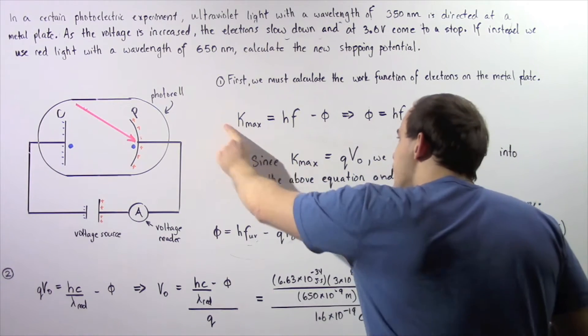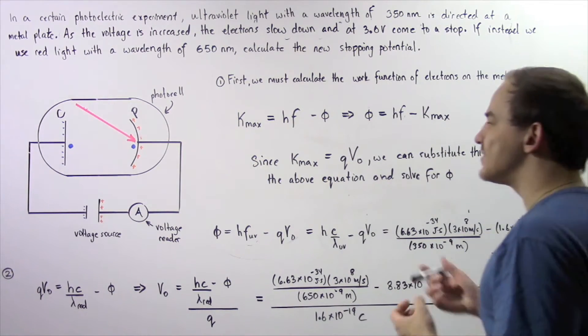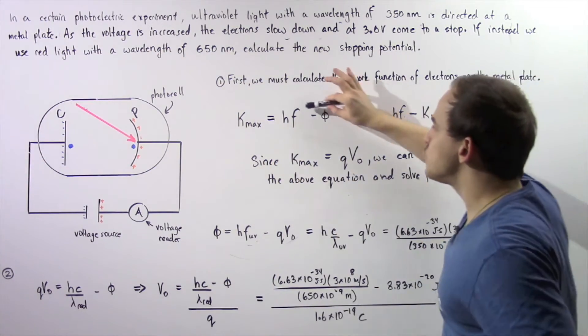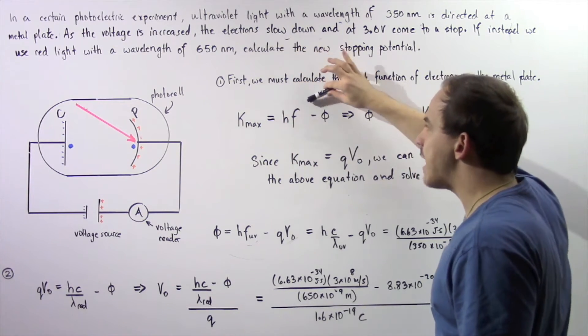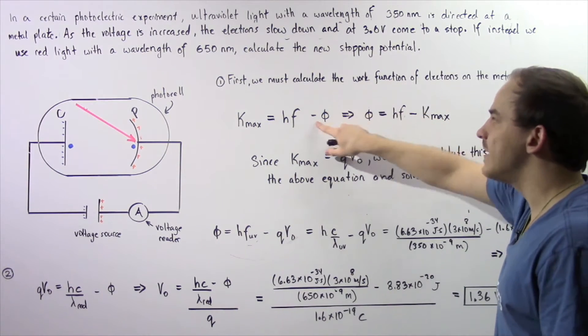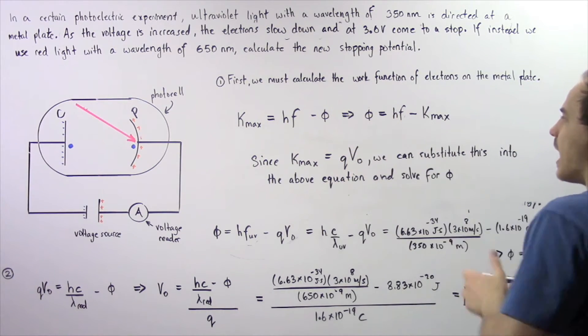So basically, the maximum kinetic energy that our electron has as it travels across from plate P to plate C is equal to the energy found on a single photon. So H times F, where F is the frequency of light minus phi, which is our work function. So we rearrange and solve for phi.